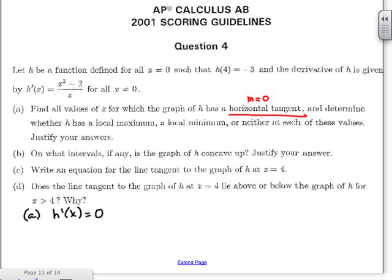So I have 0 equals x squared minus 2 all over x. I know x is not equal to 0 so it's not undefined there. In order for a fraction to equal 0 the numerator is what would have to be 0. So I have 0 equals x squared minus 2. Add the 2 over so I get x equals plus or minus the square root of 2.